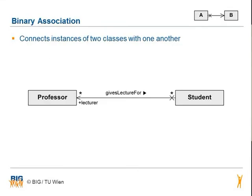The binary association connects instances of two classes with one another. The head of the arrow shows that it is navigable to the class, and the cross means that it is non-navigable. 'Gives lecture four' is the association name. The filled arrow shows the reading direction.